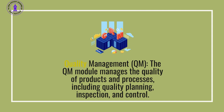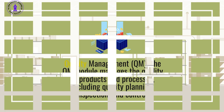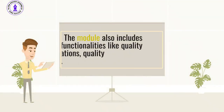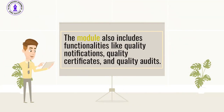Quality Management (QM): The QM module manages the quality of products and processes, including quality planning, inspection, and control. It enables companies to ensure that their products and services meet the desired quality standards and comply with regulatory requirements. The module also includes functionalities like quality notifications, quality certificates, and quality audits.